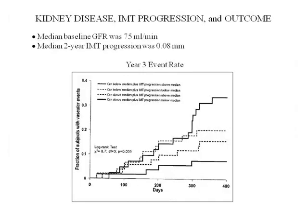Kidney dysfunction is associated with both a relative increase in IMT and a greater rate of IMT change — which shouldn't surprise us since the kidney is a vascular organ. Most patients with chronic kidney disease don't die of kidney disease; they die of cardiovascular disease, because kidney disease leads to cardiovascular disease and vice versa. Event rate was greatest in those with below average kidney function and below average IMT progression, and least in those with above-midline kidney function and below-midline IMT progression.